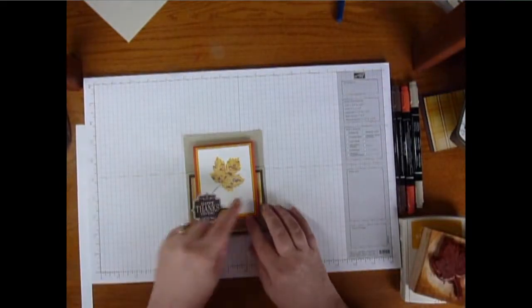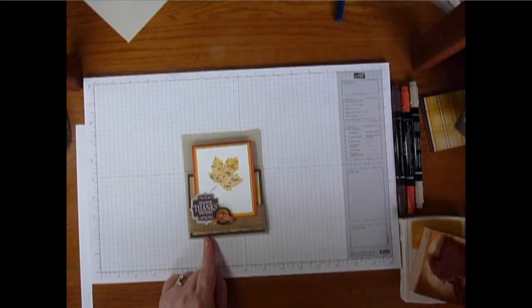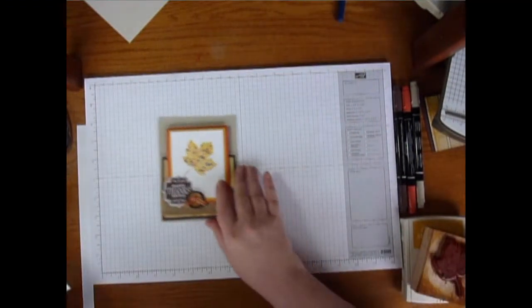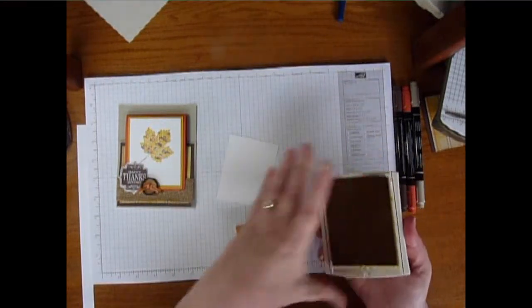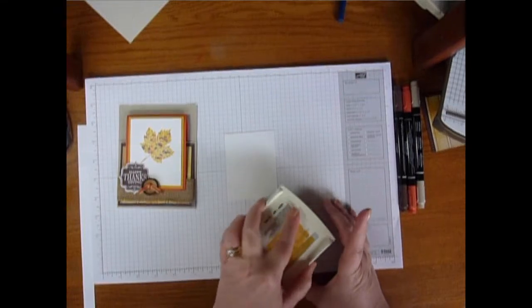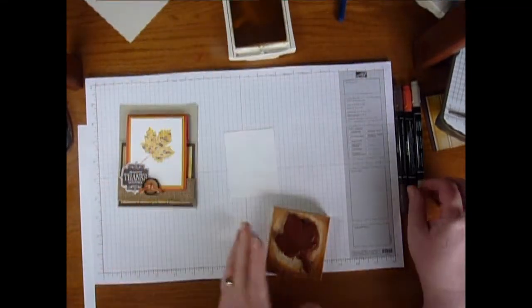The other thing I wanted to show you is how to make this stamped image with the Magnificent Maple. This is a technique called thumping. What you want to do is take your ink and ink it up. So we're going to ink up the stamp with some Crushed Curry. You do want to make sure you're starting with a clean stamp.